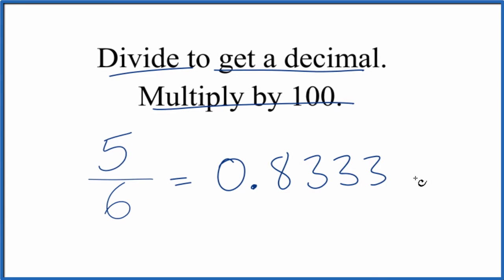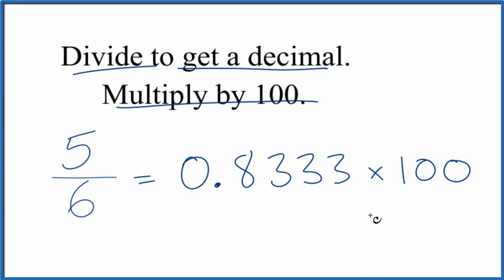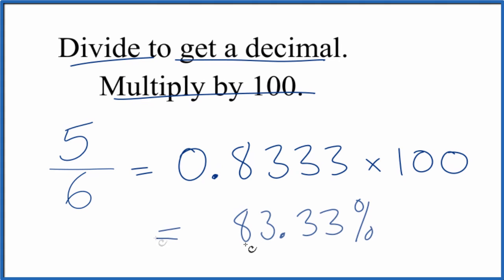We're going to multiply this by 100, and we get 83.33%. That means that 5 is 83.33% of 6. Do note that the 3 does keep repeating. So if you're asked for more decimal places, you should add those. It's not exactly 83.33; there's a little bit more.